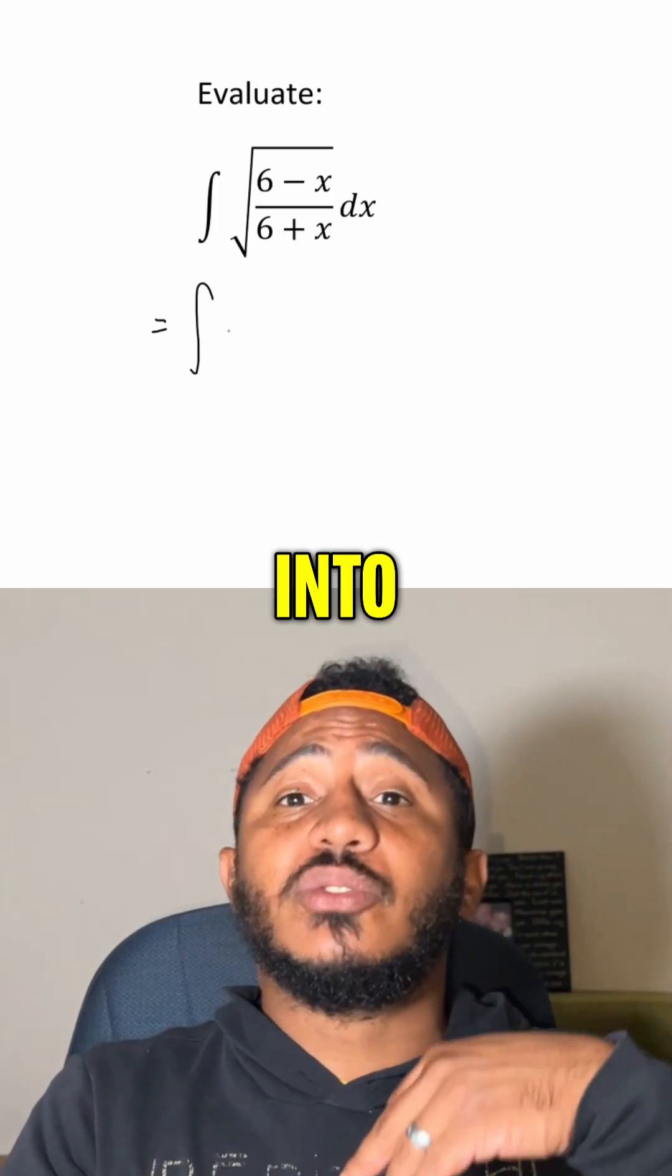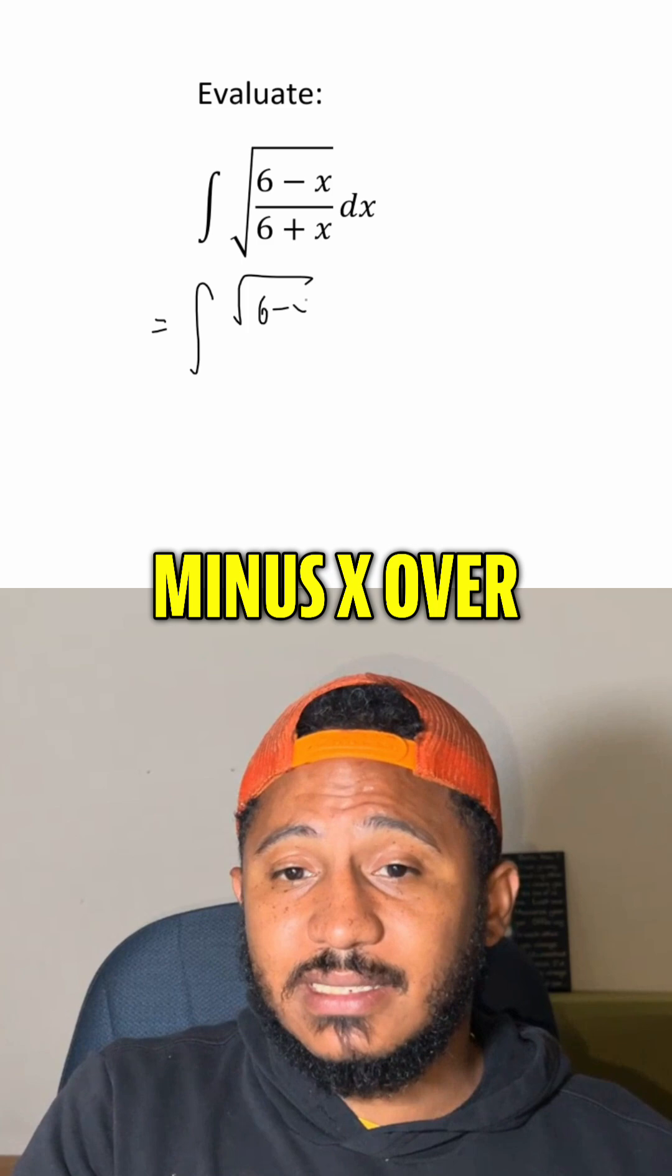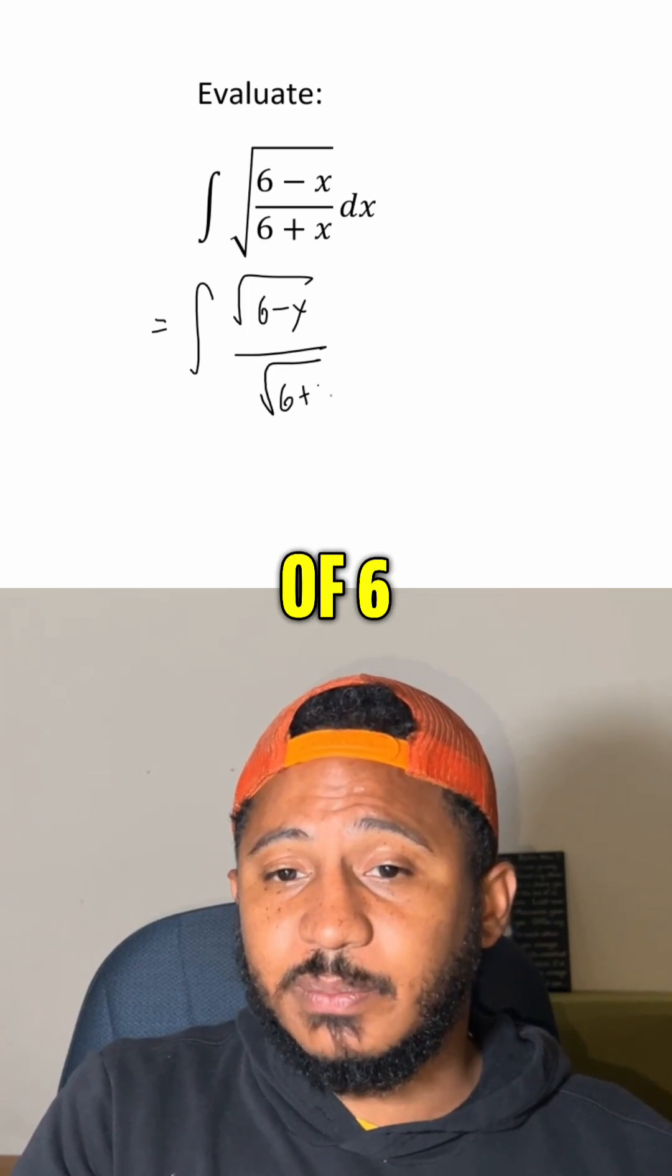First let's put this up into the square root of the top and the square root of the bottom. So we get the square root of 6 minus x over the square root of 6 plus x dx.